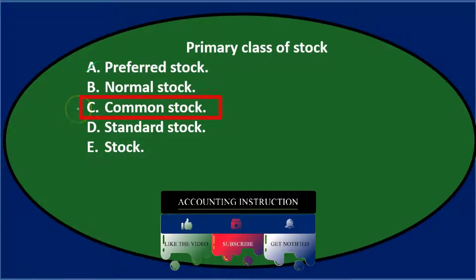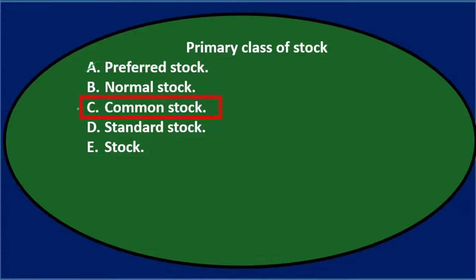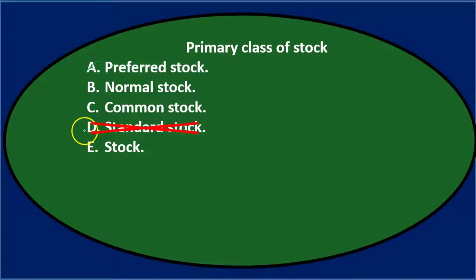Common stock probably rings a bell — we hear that term and it sounds familiar. Standard stock sounds nice but I don't think that's actually a thing, so I'll cross that out. And E just says stock, which doesn't specify the type, so that's probably not it either.